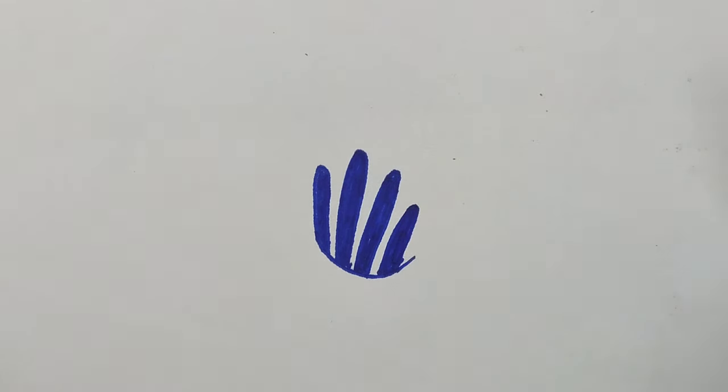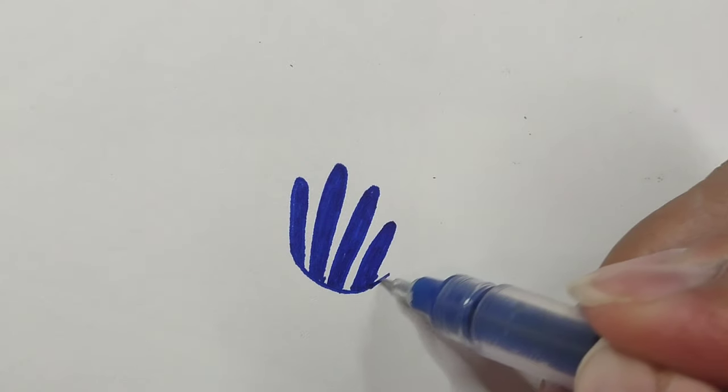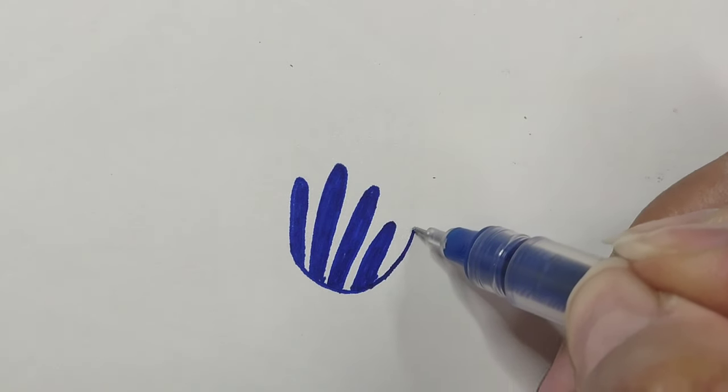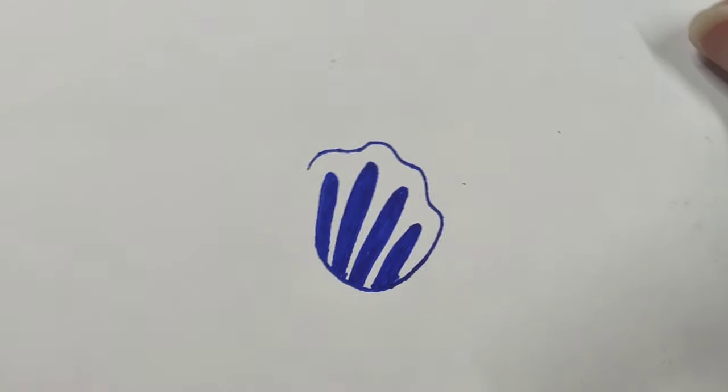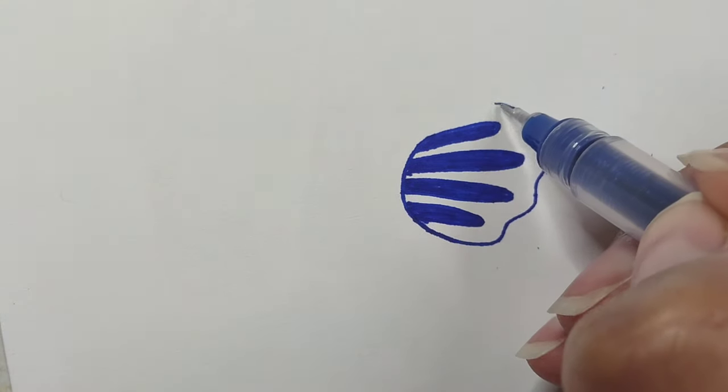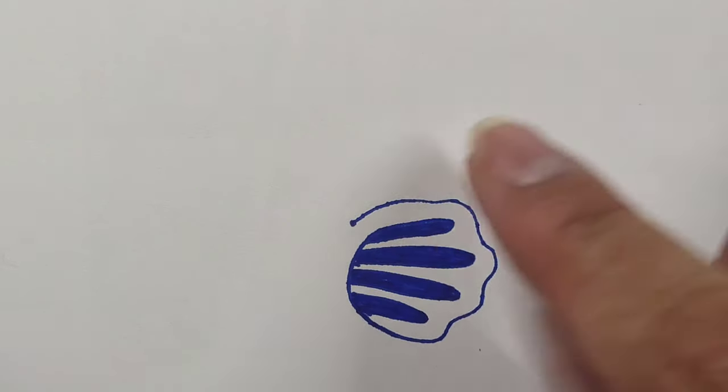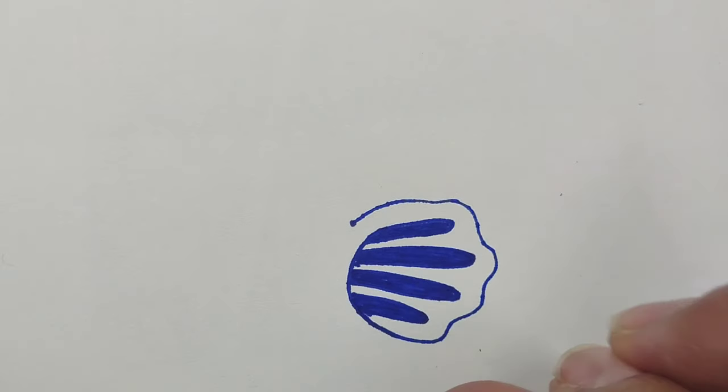And so once I fill those in then I'm going to go and focus on that little line that's kind of pointing towards the right. I'm going to follow that over the top of all those little arches that I filled in. So it's starting to look a little bit more like a solid form. I'm just going to follow it around and notice I'm rotating the page.